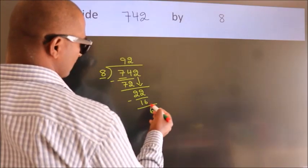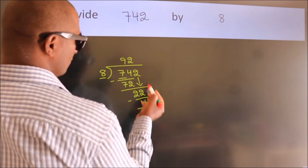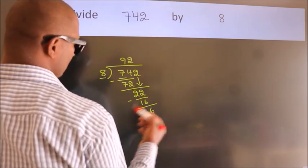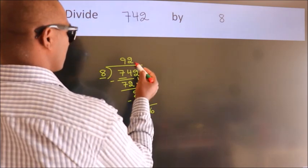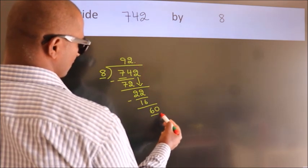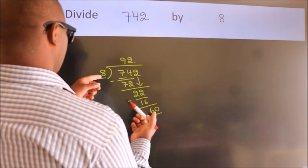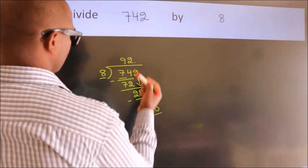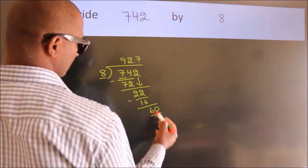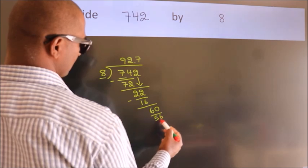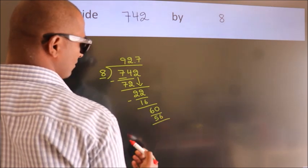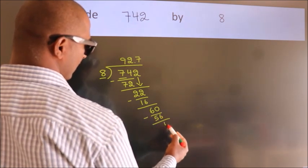After this, no more numbers to bring down. So what we do is put a dot and take 0, so 60. A number close to 60 in the 8 times table is 8 sevens, 56. Now we subtract, we get 4.